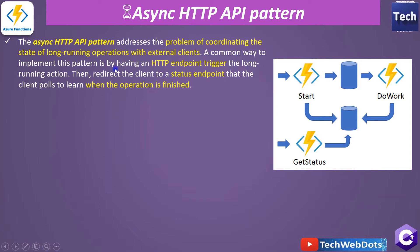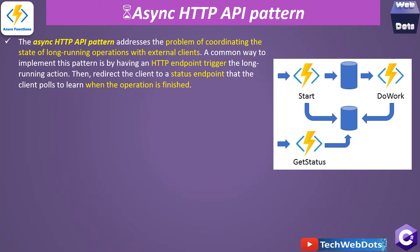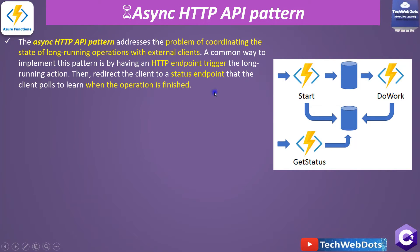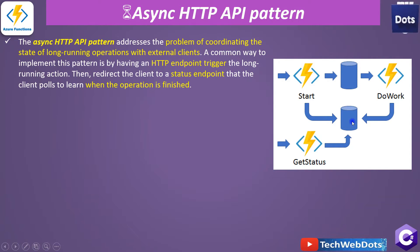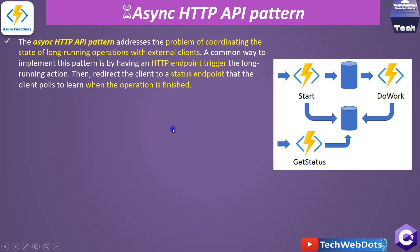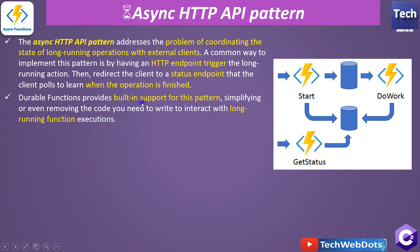A common way to implement this pattern is by having an HTTP endpoint trigger the long-running action, then redirect the client to a status endpoint that the client polls to learn when the operation is finished. From the figure you can understand: a start function will start the orchestration, then an activity function will run, and we will get a location URL — the get-status URL — from which we can get the updated status.